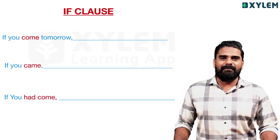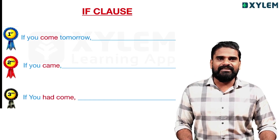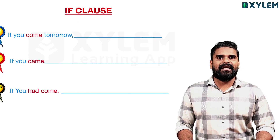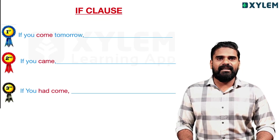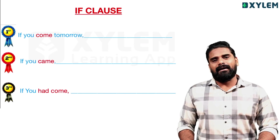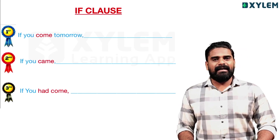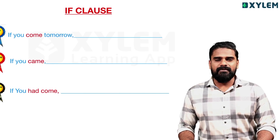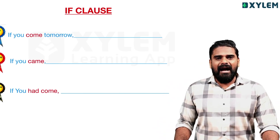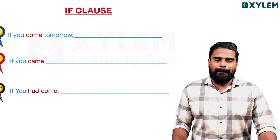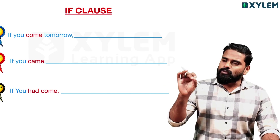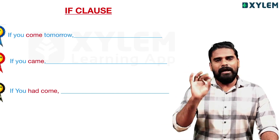There are three conditions: first condition, second condition, and third condition. For example, in the first condition: 'If you come tomorrow, you will win.' This is the structure of our sentence.